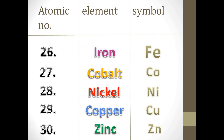The 26th element is Iron and its symbol is Fe. The 27th element is Cobalt and its symbol is Co. The 28th element is Nickel and its symbol is Ni. The 29th element is Copper and its symbol is Cu. The 30th element is Zinc and its symbol is Zn.